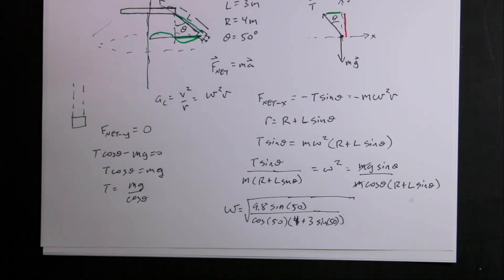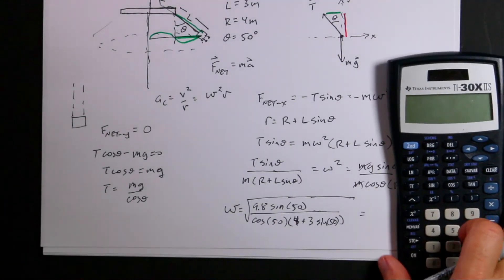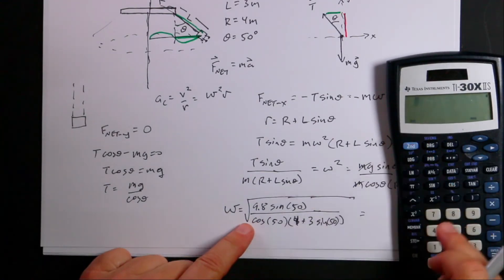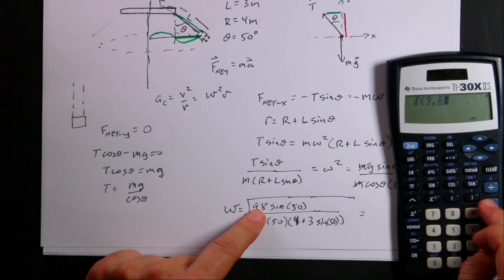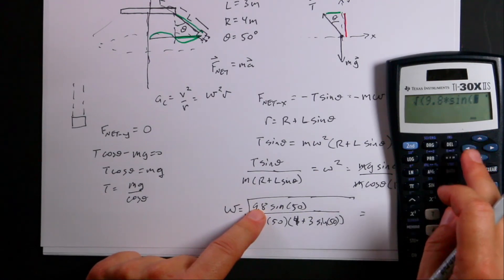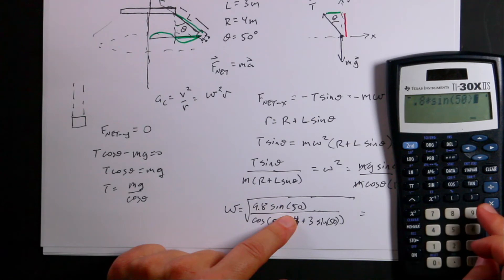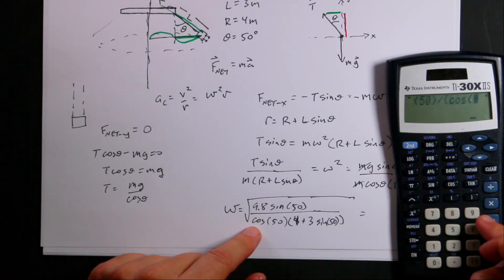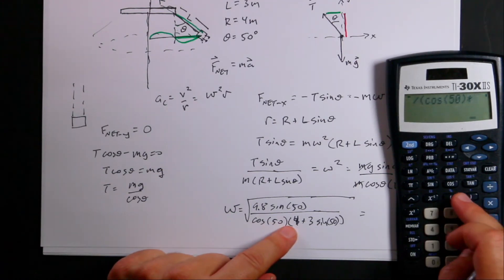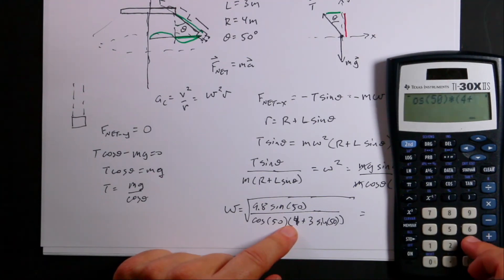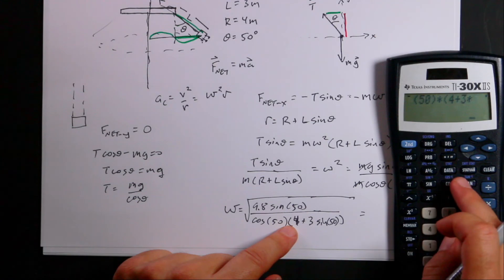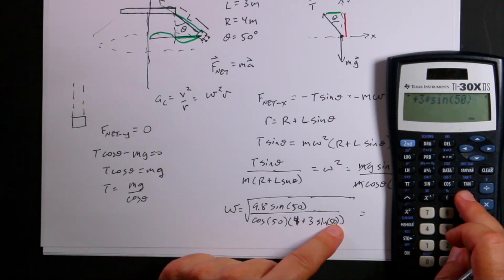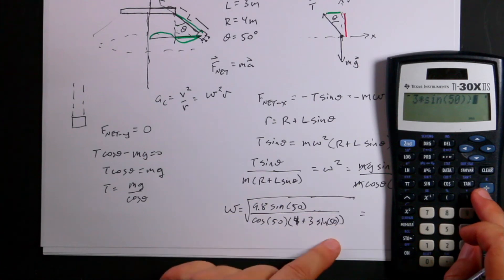Now I have to put that in my calculator. I'm not looking forward to this because I'll probably make a mistake, but I'll do it anyway. Using this calculator I hate. So square root, then 9.8 times sine 50 degrees, close parentheses, divided by parentheses, cosine 50, close parentheses, times parentheses, 4 plus 3 times sine 50, close parentheses, close parentheses, close parentheses.